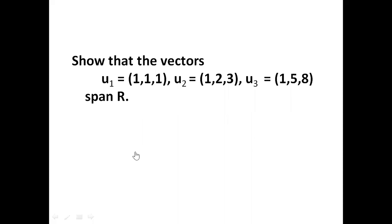Let us show that the vectors u sub 1 equals (1, 1, 1), u sub 2 equals (1, 2, 3), and u sub 3 equals (1, 5, 3) span R³.